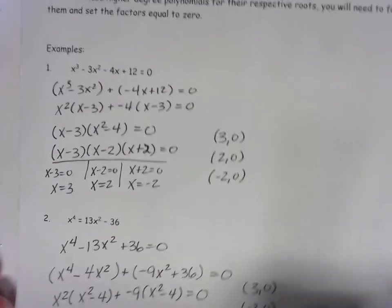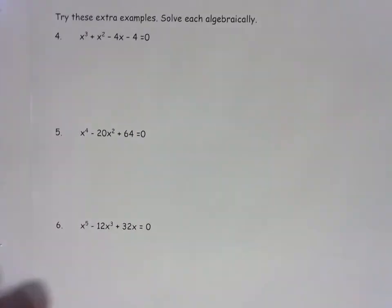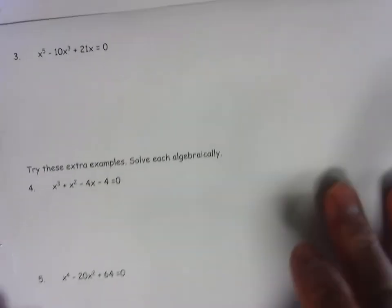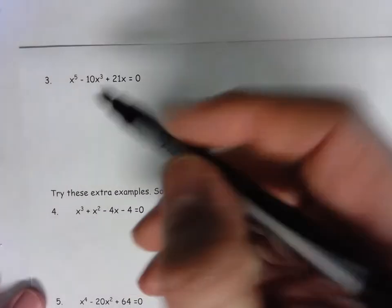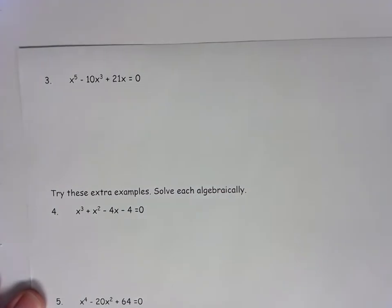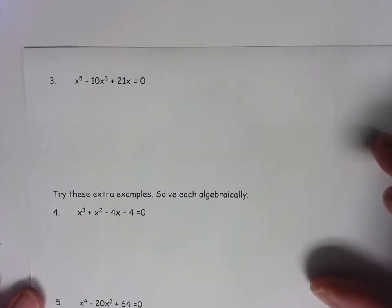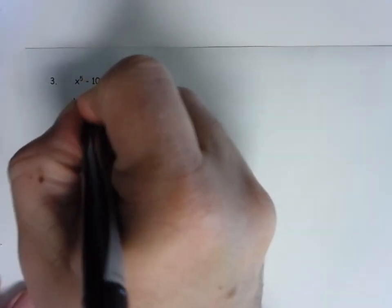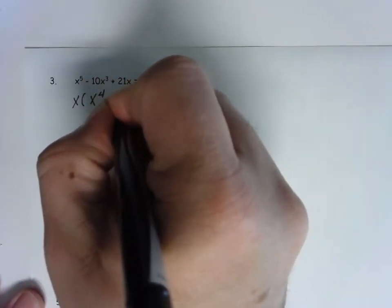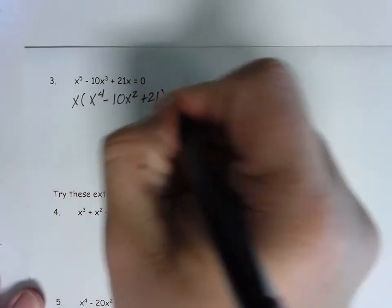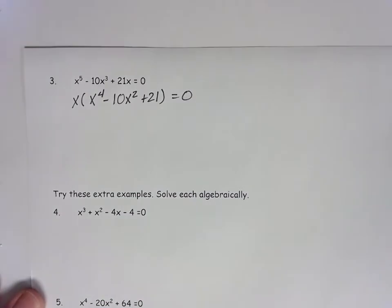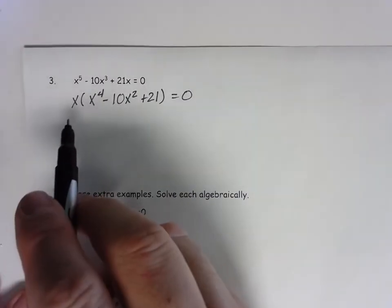Looking at example number 3, I now have a quintic, my leading power is 5. Well, I have x to the 5th minus 10x cubed plus 21x. So I'm going to factor an x out. Make this x to the 4th minus 10x squared plus 21 equal to 0. Don't lose that x because that's going to be one of our roots.